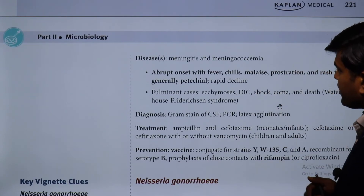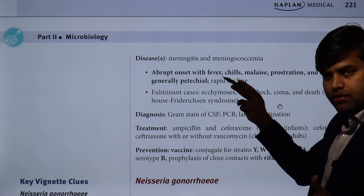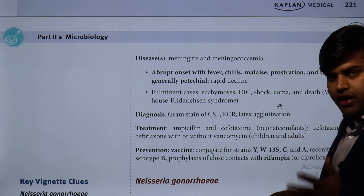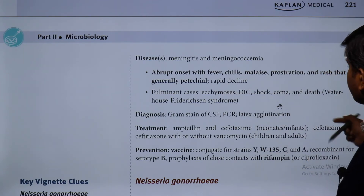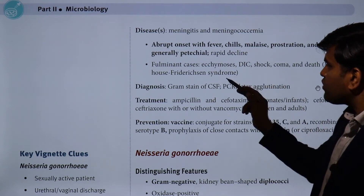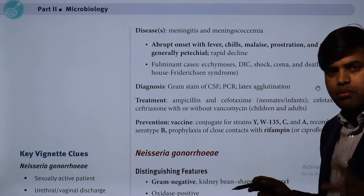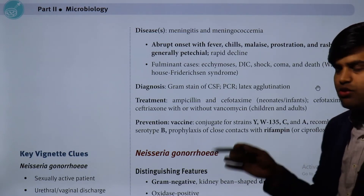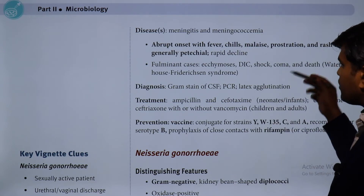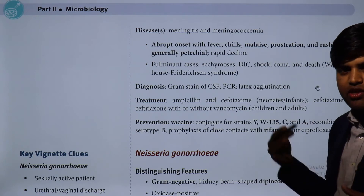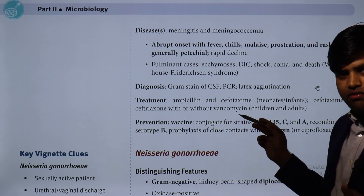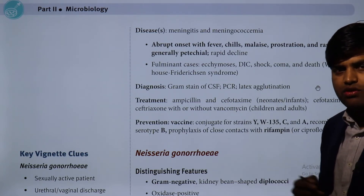Clinical features of meningococcal meningitis include abrupt onset of fever, chills, malaise, prostration, and rash — generally petechial — that rapidly declines. In fulminant cases there will be ecchymosis, DIC, shock, coma, and death — known as Waterhouse-Friderichsen syndrome. This is a complication specific to N. meningitidis (not gonorrhoeae) where adrenal crisis leads to DIC and shock. The patient may develop disseminated intravascular coagulation, coma, and death.